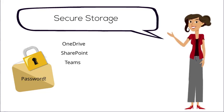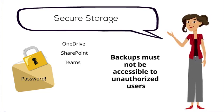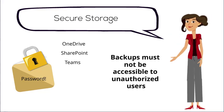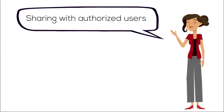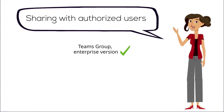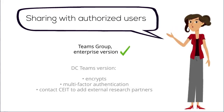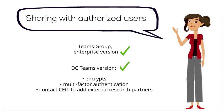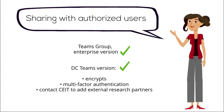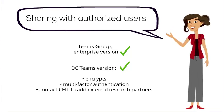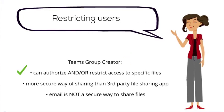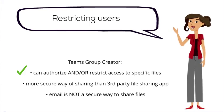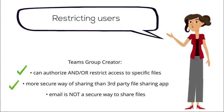Any restricted files backed up to a device such as a college-issued encrypted desktop computer, laptop, or external hard drive must not be accessible to unauthorized users. The best way to share projects with authorized team members is to create a Teams group for the project using the enterprise version of Teams, not a personal account. The college platform automatically encrypts and protects files with multi-factor authentication. Teams also allows the group creator to share or restrict access to specific files to specific team members as needed, making it a more secure sharing option than using a third-party file transferring service or email, which is not at all secure.